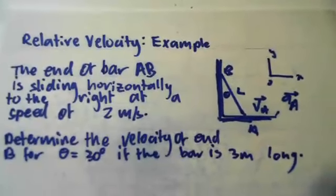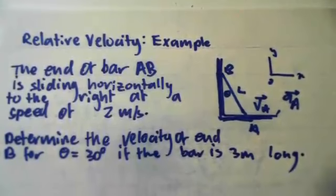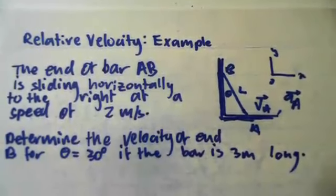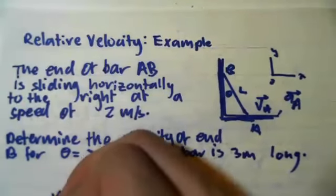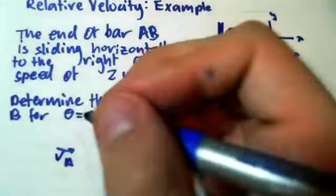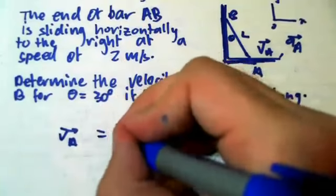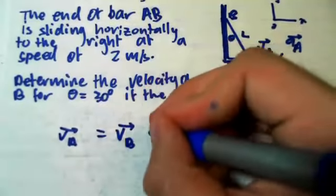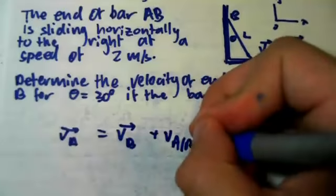So if the bar is 3 meters long, the first thing we want to do is write a velocity equation for A with respect to B. So this is for relative velocity. For relative velocity, V of A equals V of B plus V of A with respect to B.